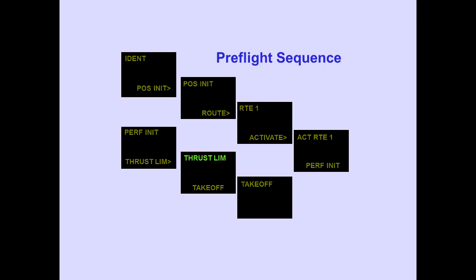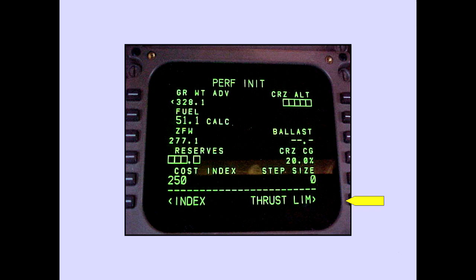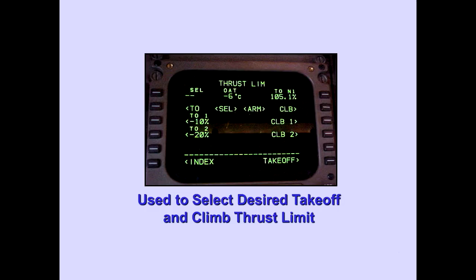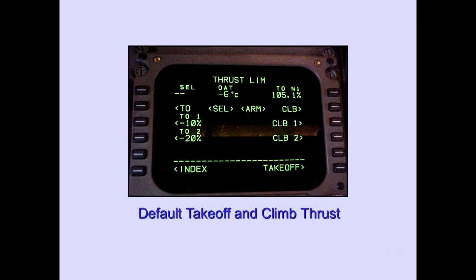The pre-flight sequence continues on the thrust limit page. Pushing the lower right line select key displays the thrust limit page, which is used to select the desired takeoff and climb thrust limit. Default takeoff and climb thrust is full-rated thrust. "Select" is displayed to the right of takeoff (T/O), and "arm" is displayed to the left of climb (CLB). The selected thrust limit is displayed on the N1 title line.